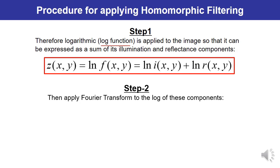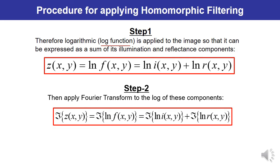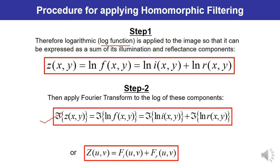Step 2: Apply the Fourier transform to the log of the components. By applying the Fourier transform, the result z(x,y) — the Fourier transform of the whole function — equals the Fourier transform of the logarithmic illumination term plus the Fourier transform of the reflectance term. Alternatively, it can be written as Z(u,v) = F_i(u,v) + F_r(u,v), where F_i(u,v) is the Fourier transform of the illumination component and F_r is the Fourier transform of the reflectance component. This shows how to convert from the spatial domain to the frequency domain.